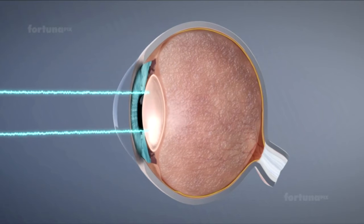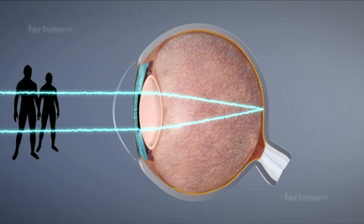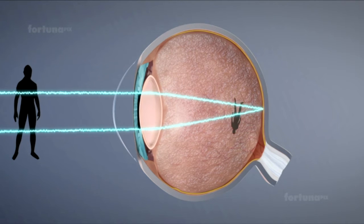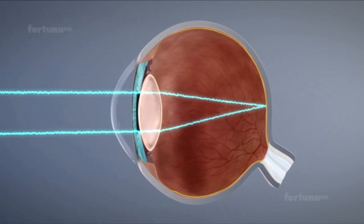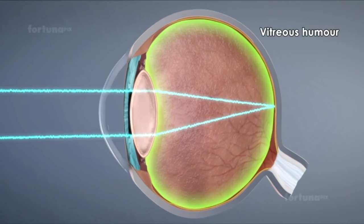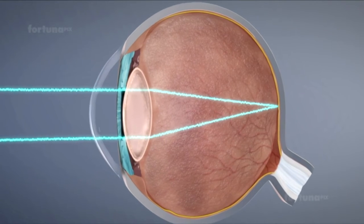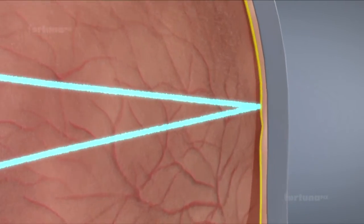A crystalline lens located behind the iris will focus the light rays so they converge on a nodal point, where the image of the object will be reversed and inverted. The light will continue through the vitreous humor, a clear gel filling the eye, before focusing on the retina.